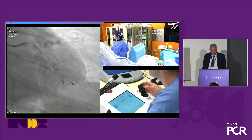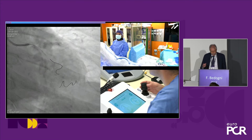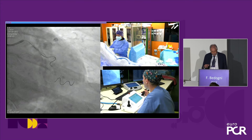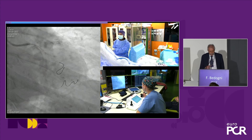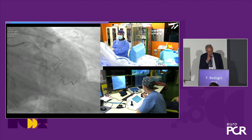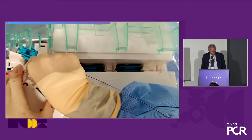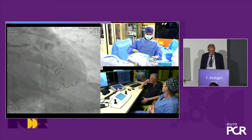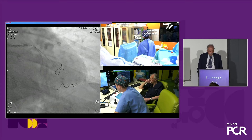We have some tortuosity. The wire can move very easily — it advances, it stops, and we pull back when it's stuck, then it goes with a drilling motion by moving the joystick and advancing. Done. Now we start with the balloon pre-dilatation.